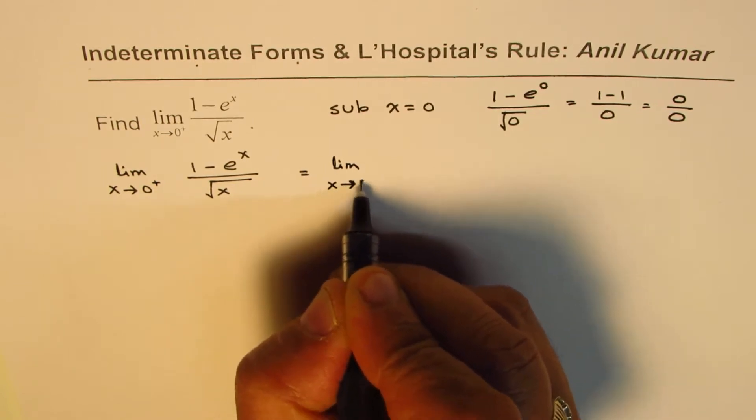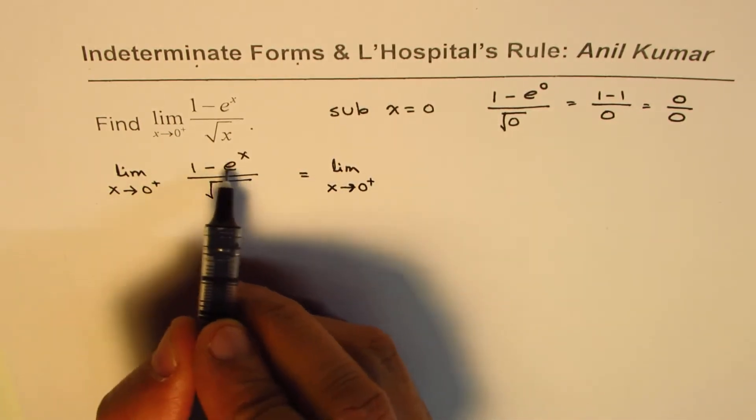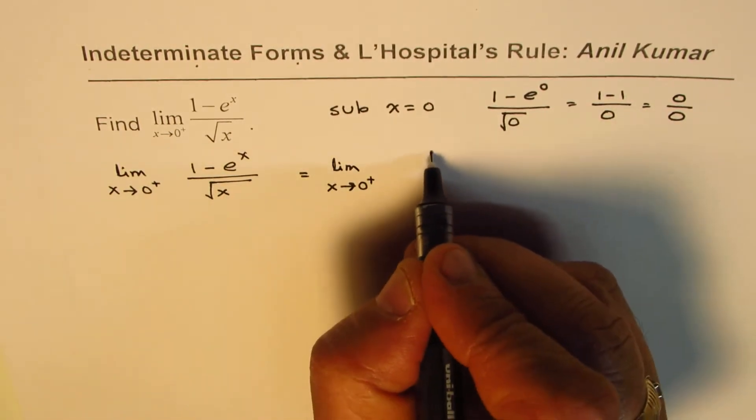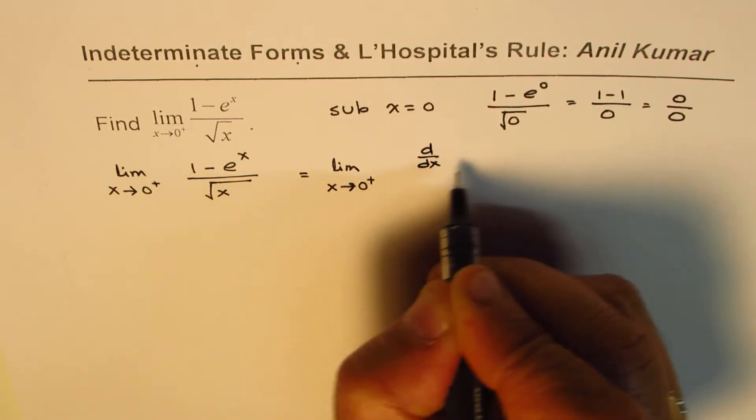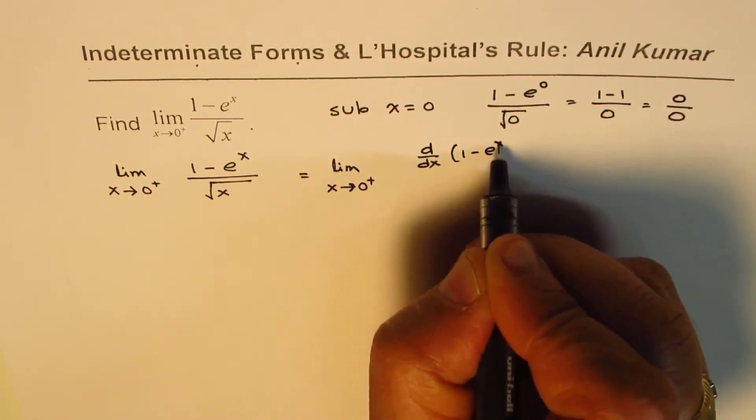limit x approaches 0+ of d/dx of (1 - e^x) over d/dx of square root of x. So that is what it means.